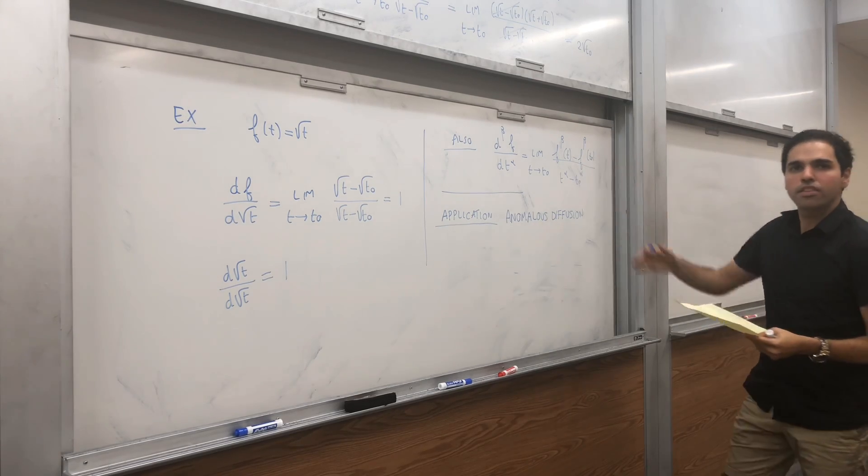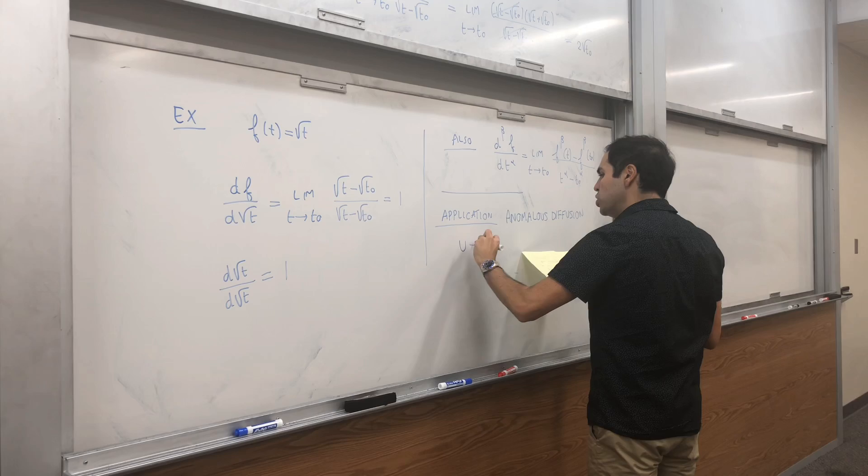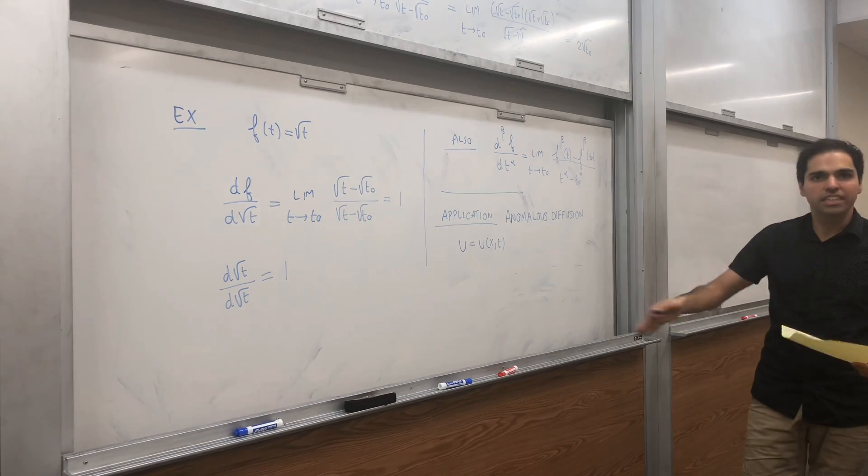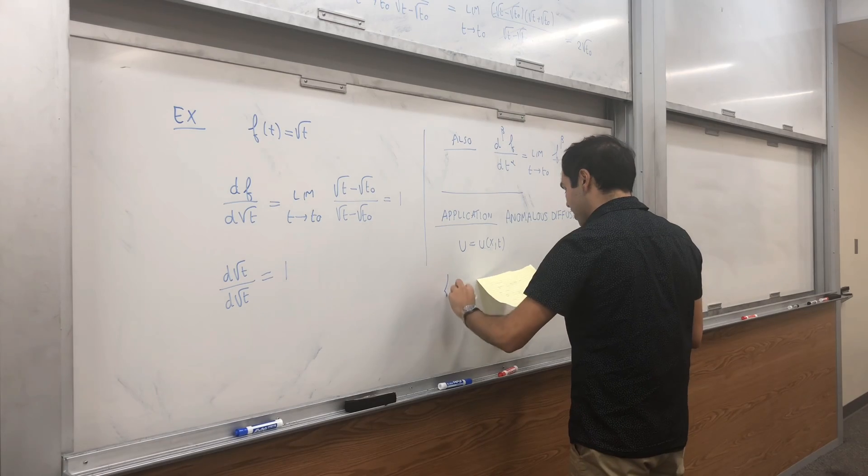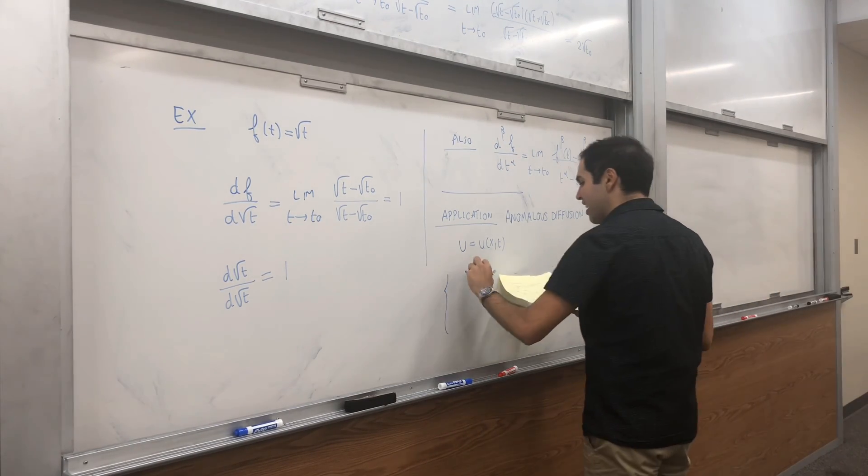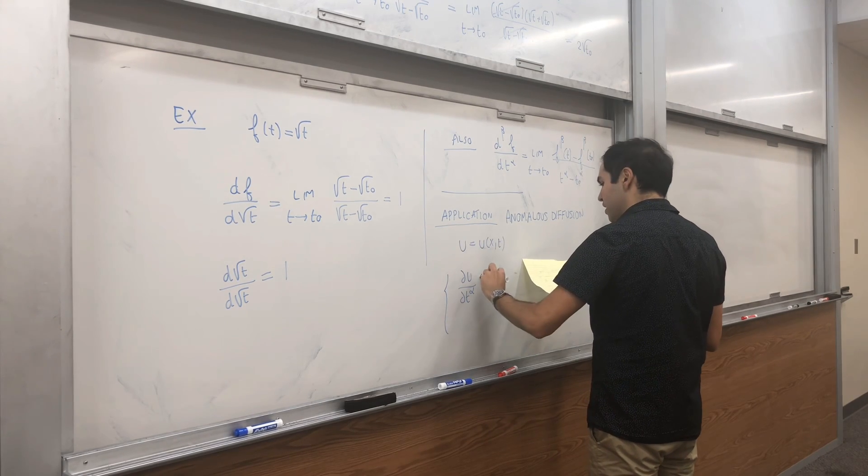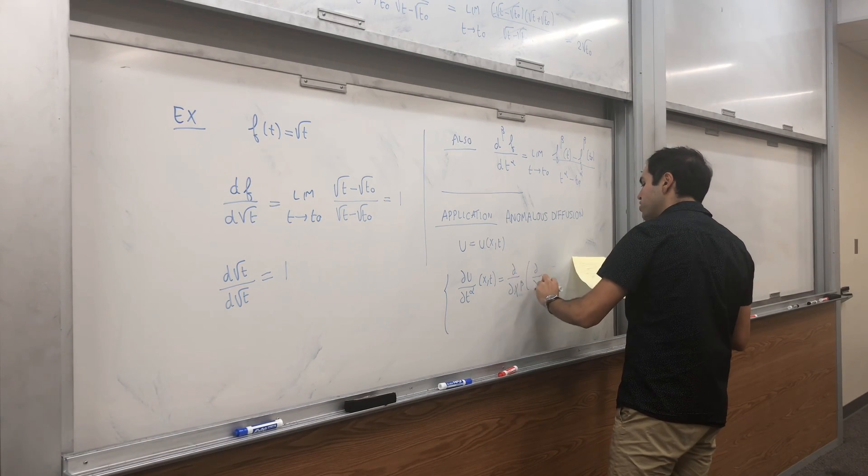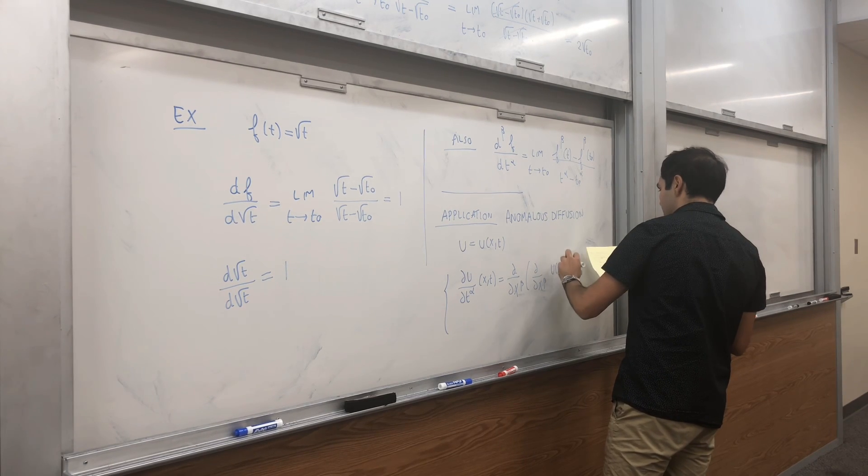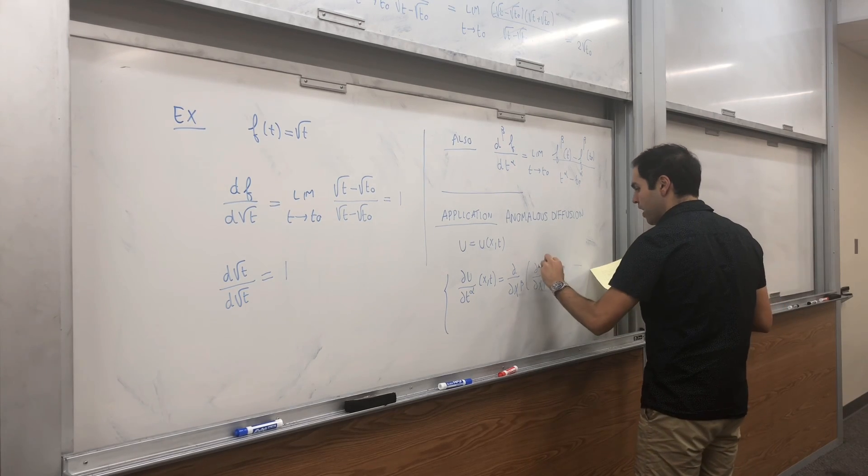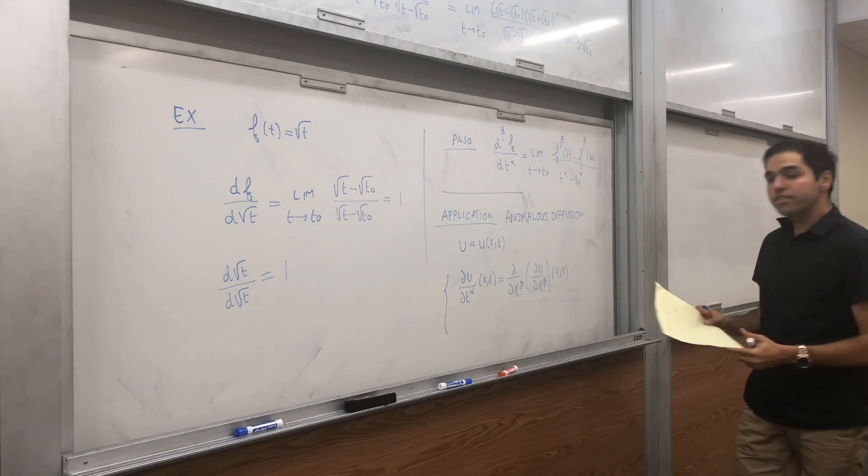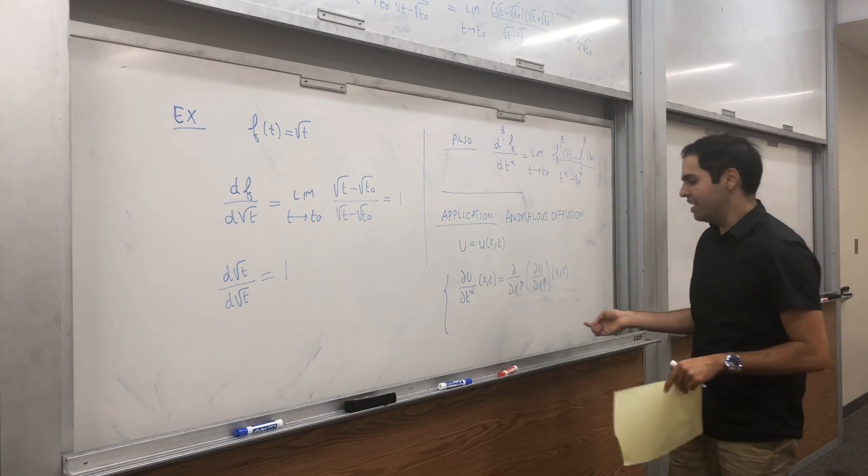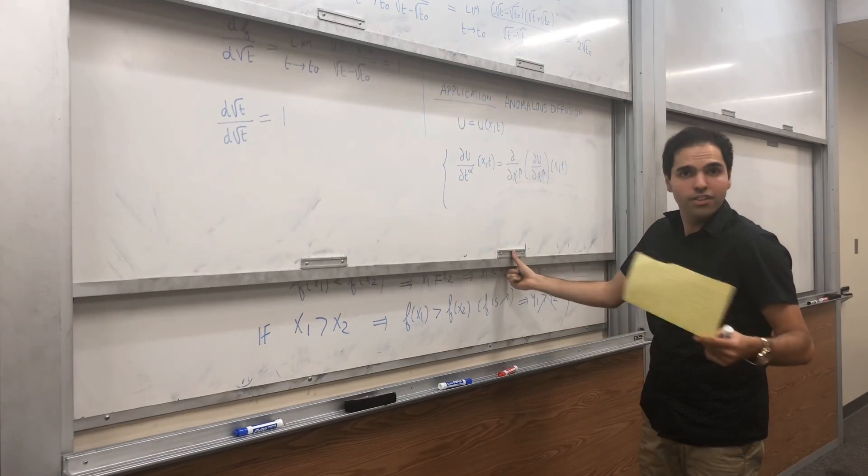And turns out they can be studied with those fractal derivatives. So, suppose u equals u of xt is the density of some fluid at position x and time t, assume it's one dimensional. Then, the anomalous diffusion can be written as partial u over partial t alpha at xt equals partial over partial x beta of partial over partial x beta u of xt. And notice carefully, if alpha and beta are one, this is just the heat equation. So, this is, if you want, a modified heat equation.